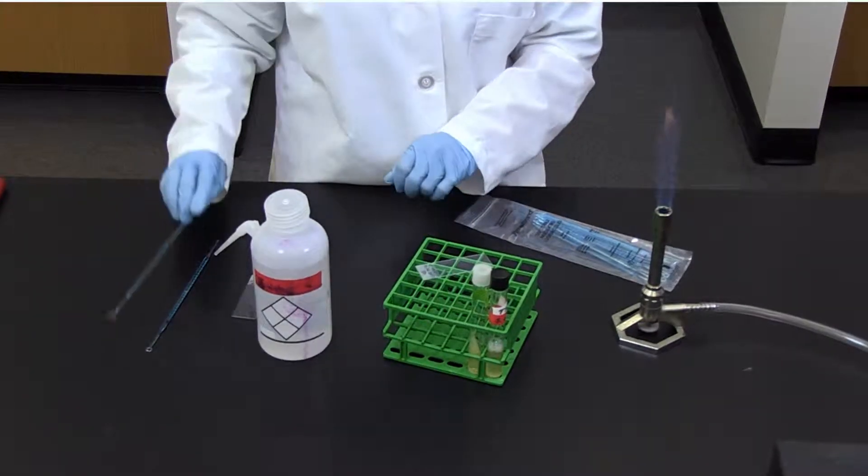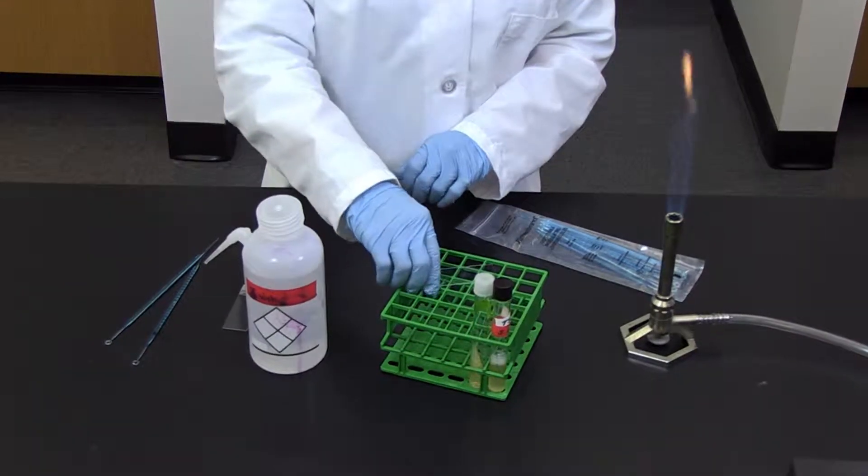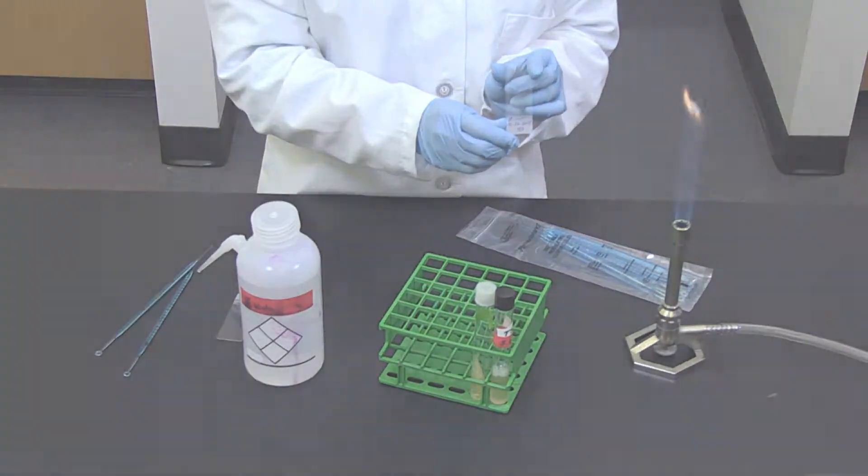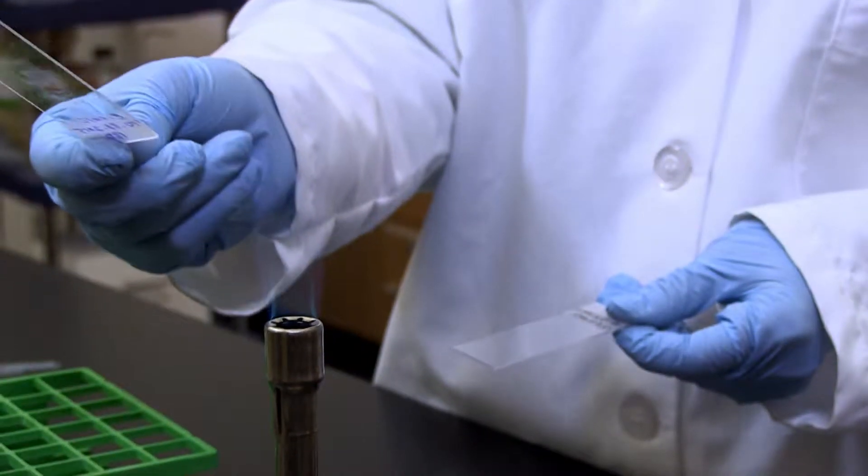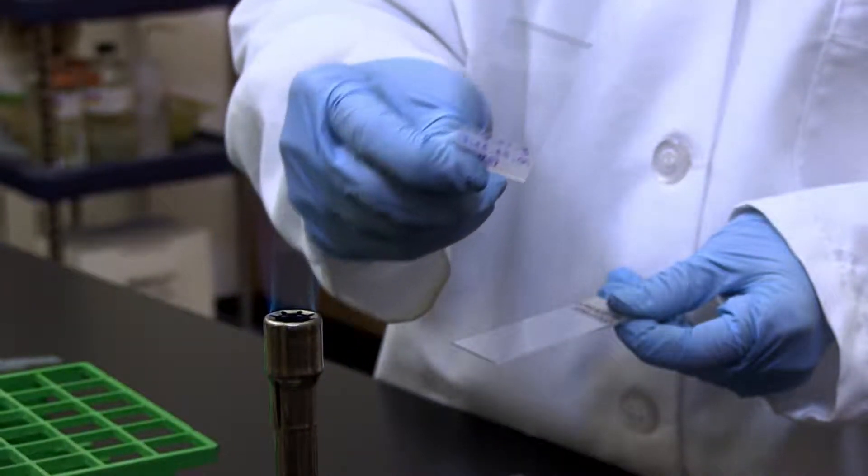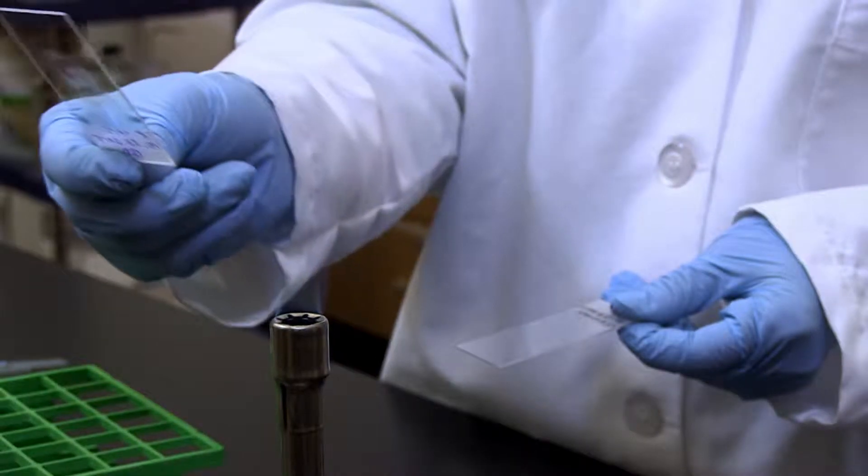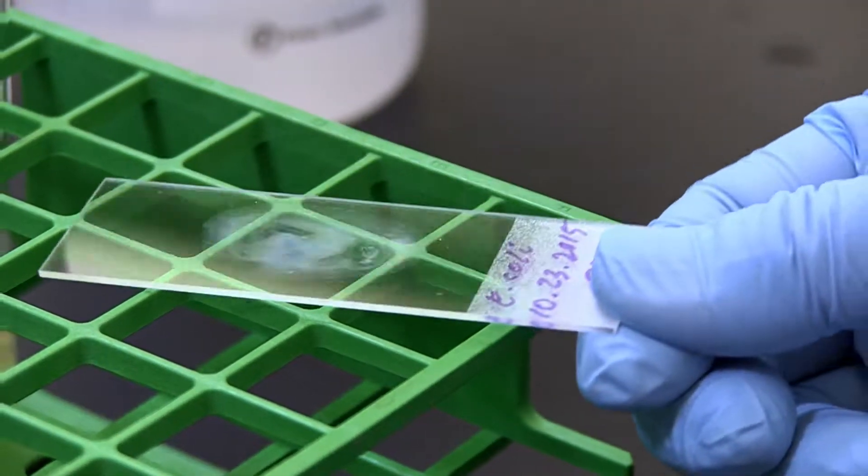Allow the smear to air dry completely. This should take 5 to 10 minutes. Finally, pass the slide with the smear on top through the flame of your Bunsen burner three to four times to heat fix the slide. The slide is now ready to use for staining.